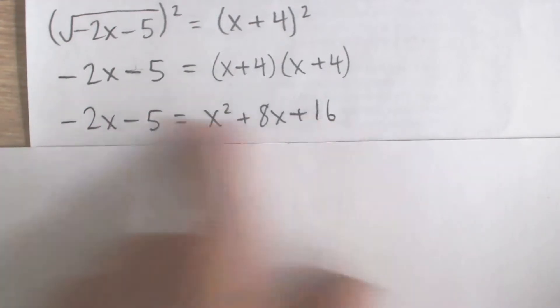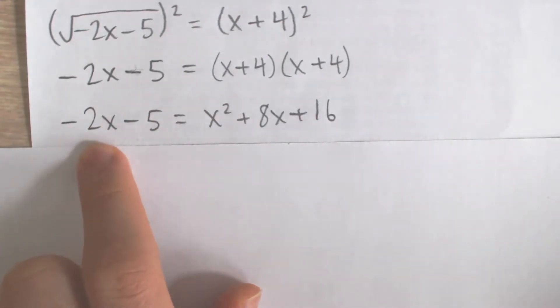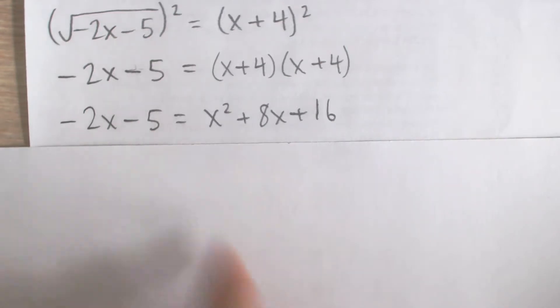Now you can see we have just a quadratic equation. So how we're going to solve this is move all the terms to the same side and then maybe factor. We'll see if we can factor it. If not, we'll use the quadratic formula.